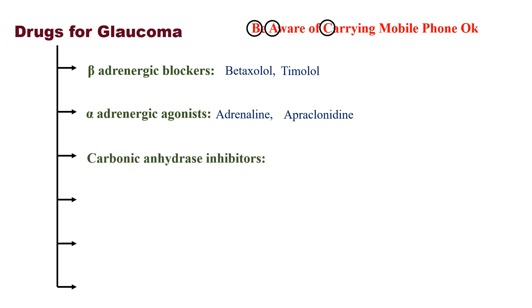C stands for carbonic anhydrase inhibitors. Every car must have AC — that's the trick. Examples: acetazolamide and dorzolamide.